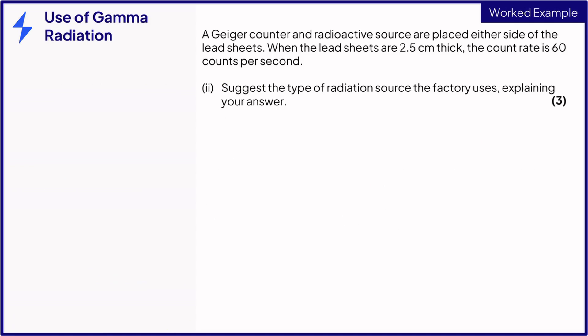Alright, part two requires you to suggest the type of radiation source the factory uses, explaining your answer. Again, this is three marks, so we'll make three separate points. This is a suggest question. These normally require a bit of thinking outside the box. Before we start, let's look at our scenario.